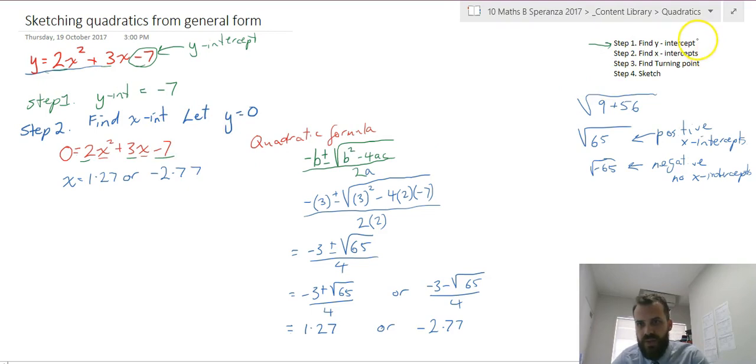Using the quadratic formula, I solved this question. So x equals 1.27 or negative 2.77. I found the y-intercept, which was negative 7. I found the x-intercepts, which were 1.27 or negative 2.77. Remember, you might not find the x-intercepts all the time, only if our determinant is positive.